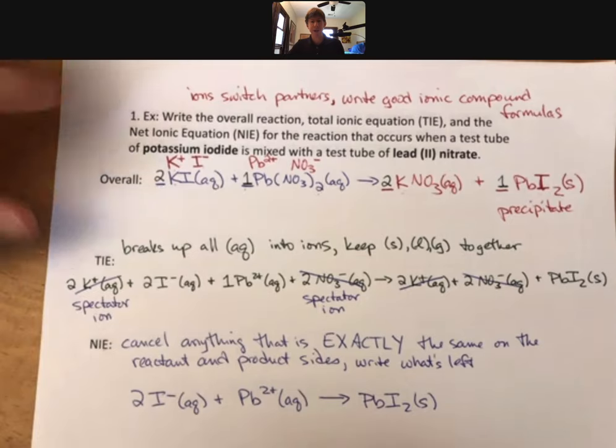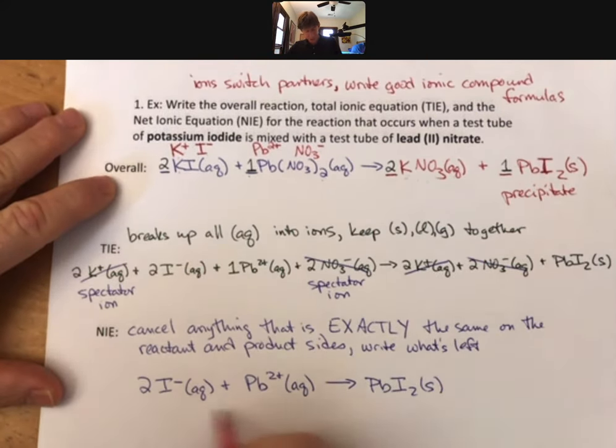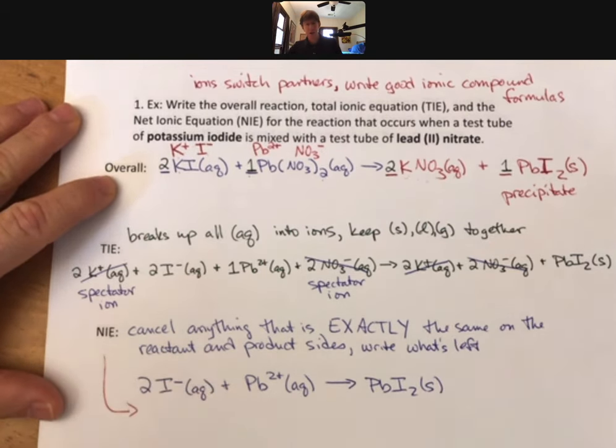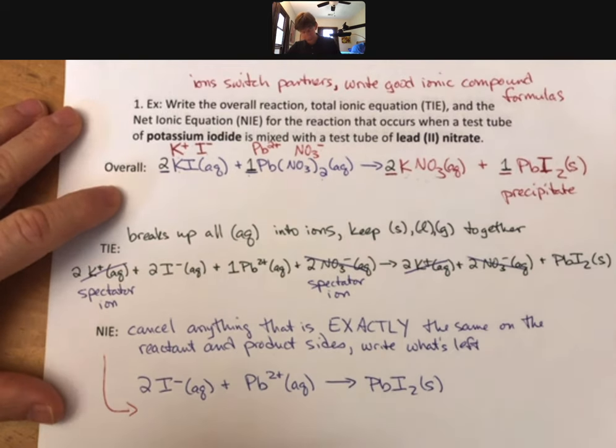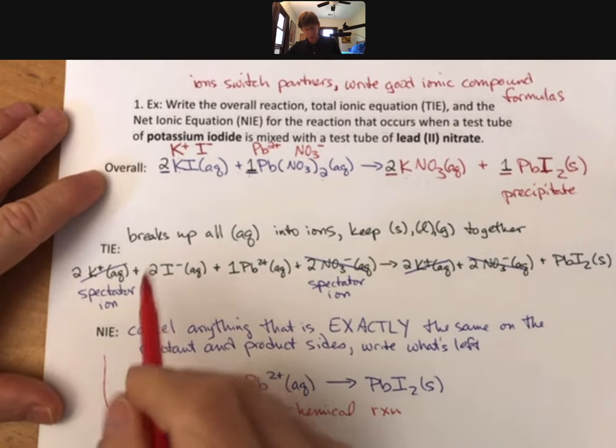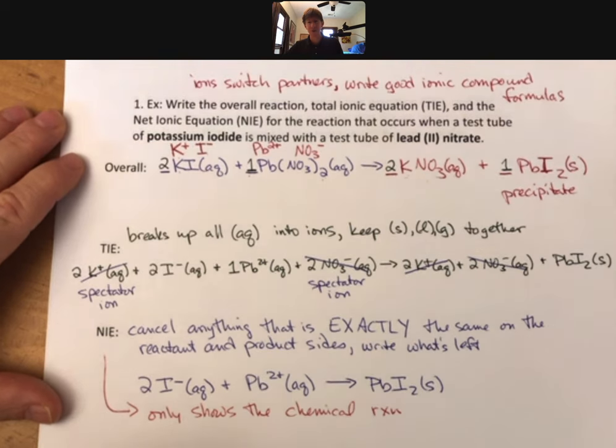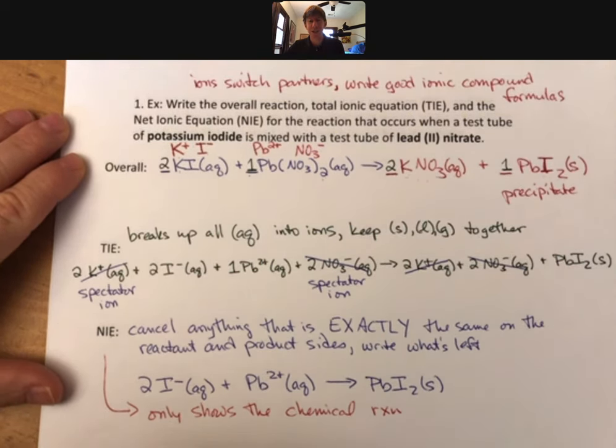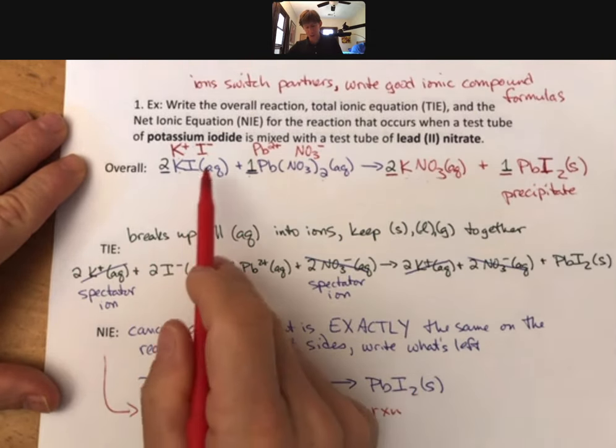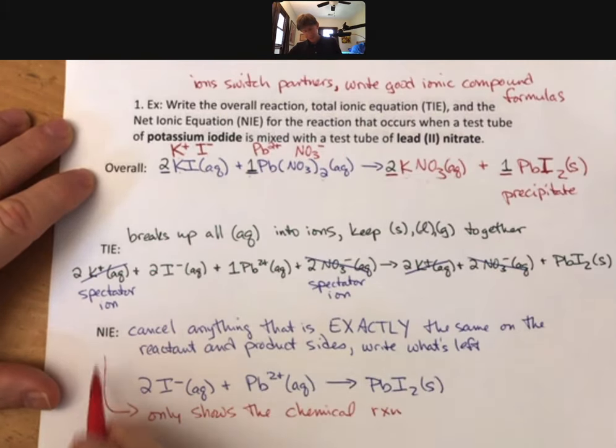This is our net ionic equation. And if your question is, why in the world are we doing this? I ask myself that all the time. It is because this, the net ionic equation, only shows the chemical reaction. All right, all these things that we canceled out, the spectator ions - spectator ions watch the chemical reaction. They're floating around in solution with their little teeny tiny salvation shells and not reacting. They started as aqueous, they end as aqueous. Nope.